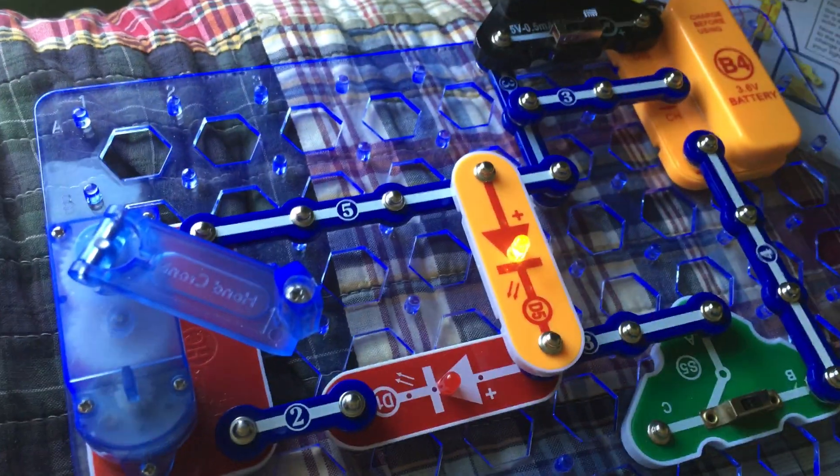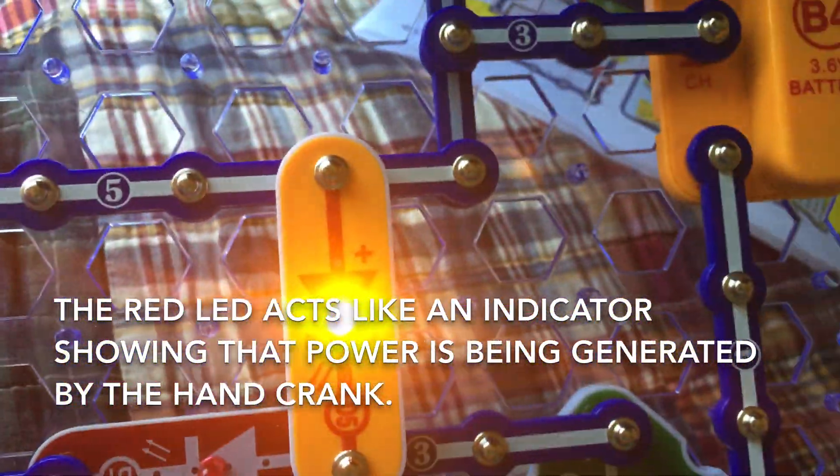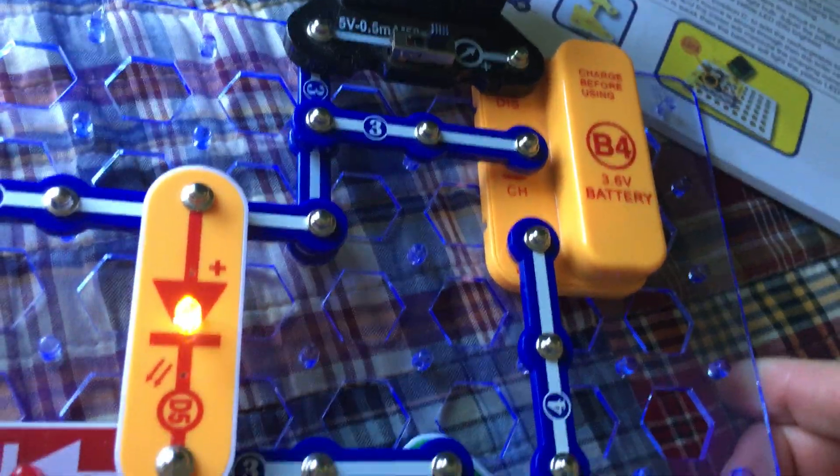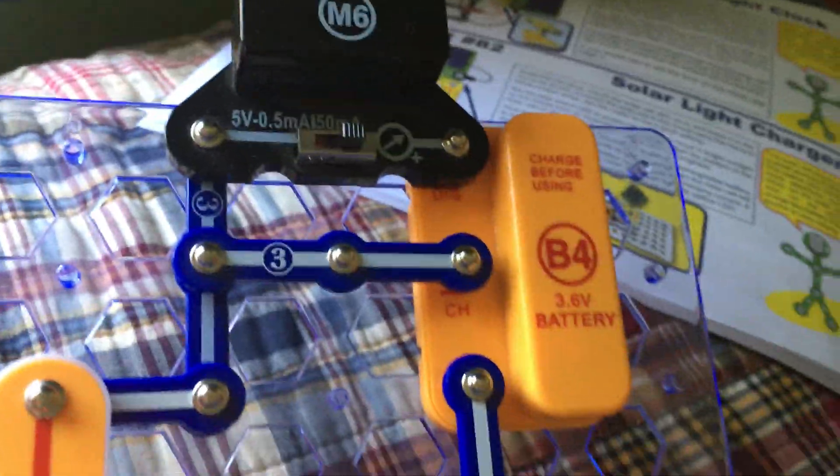And, that if the hand crank fails, then, the battery will take over and power the yellow LED for a while. Almost like a backup generator.